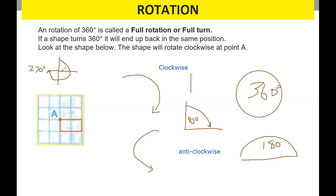So 90 plus 90 plus 90 is 270 degrees. If it's only 90, it's only a quarter turn. A full rotation or full turn is 360 degrees, and a half rotation or half turn is 180 degrees. It depends on either clockwise or anticlockwise — don't forget that.